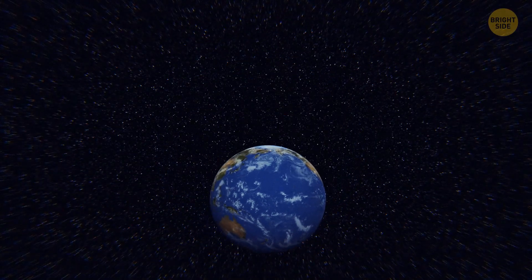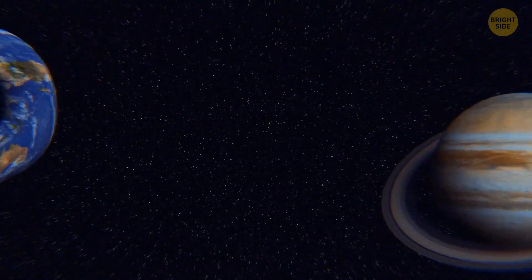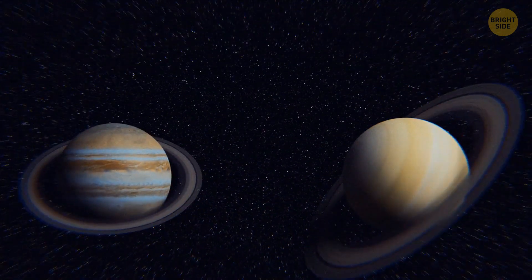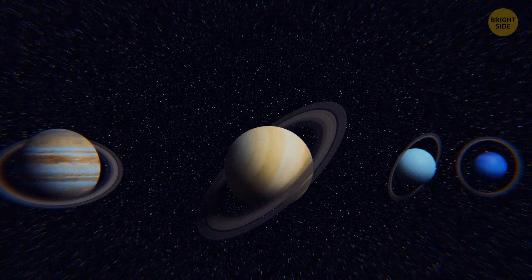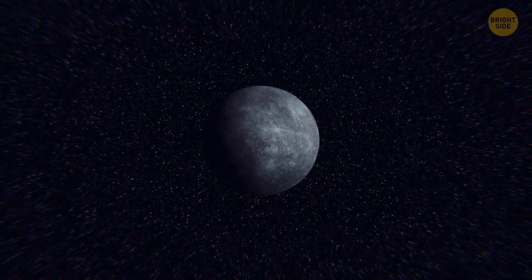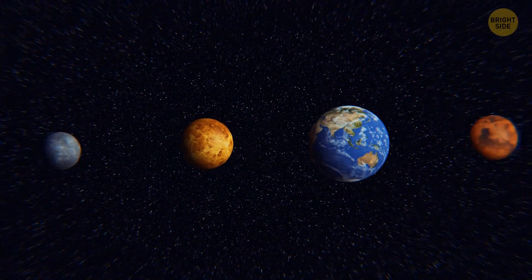How come Earth doesn't have rings? All gas giants in our solar system—Jupiter, Saturn, Uranus, and Neptune—have such rings, whereas the rocky planets Mercury, Venus, Earth, and Mars don't.